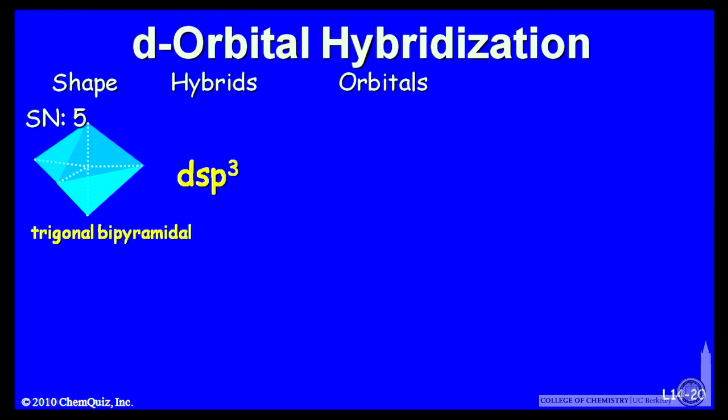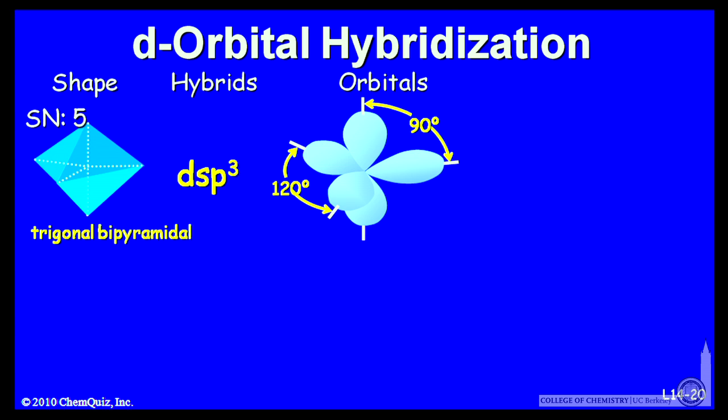DSP3 hybridization, the orbitals have two bond angles: 90 degrees and 120 degrees. And we've seen examples of this, IF3 and PCl5.